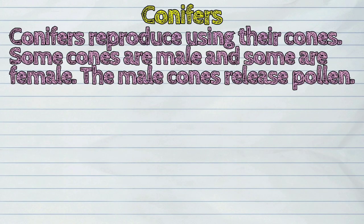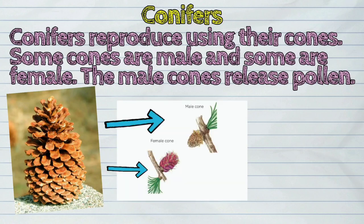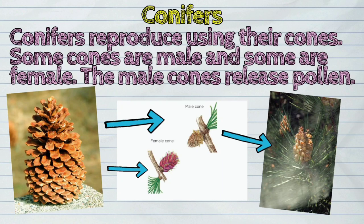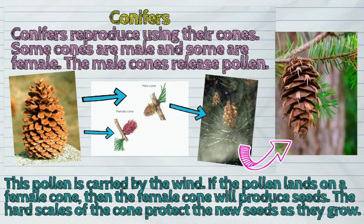Conifers reproduce using their cones. Some cones are male and some are female. The male cones release pollen, which is carried by the wind. If the pollen lands on a female cone, then the female cone will produce seeds. The hard scales of the cone protect the new seeds as they grow.